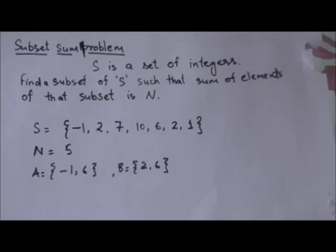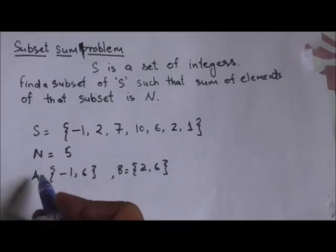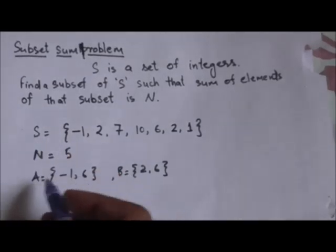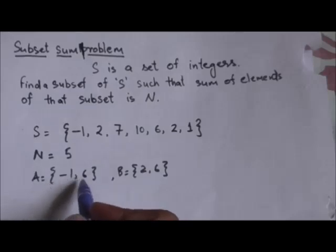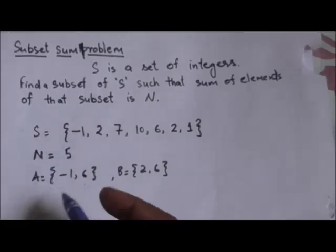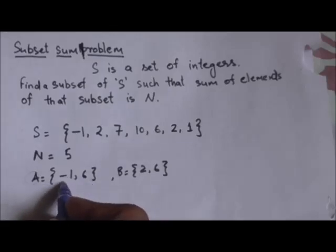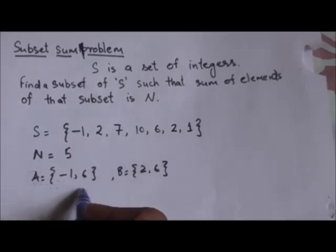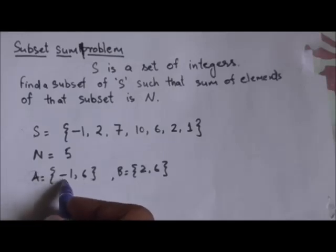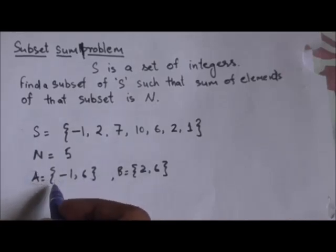This problem is not solvable in polynomial time — it is an NP hard problem. But if a solution is given to us, we can verify in polynomial time whether it is correct. For example, suppose subset A of set S is given, containing only two elements: −1 and 6. We can verify in polynomial time whether the sum of all elements of set A equals 5.